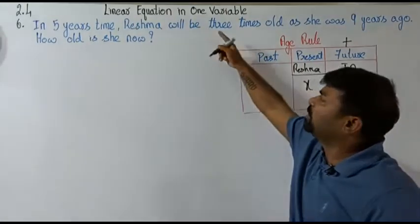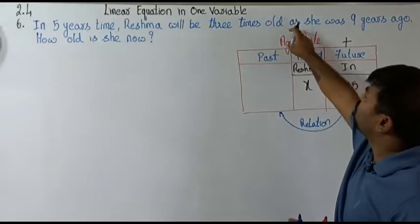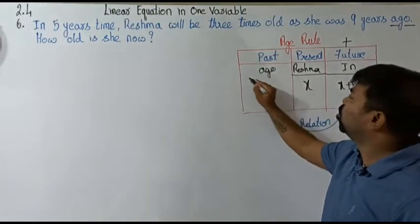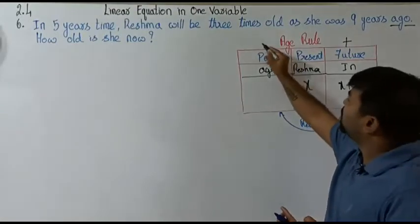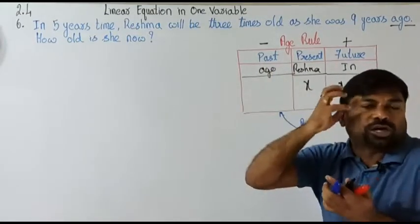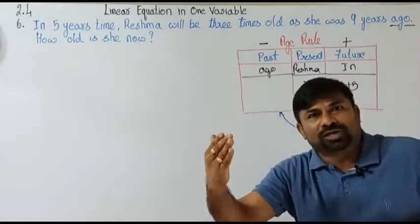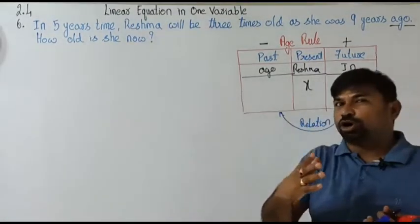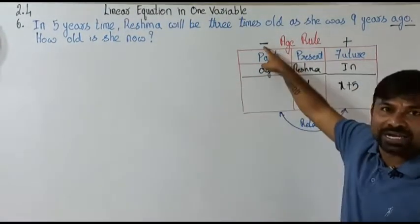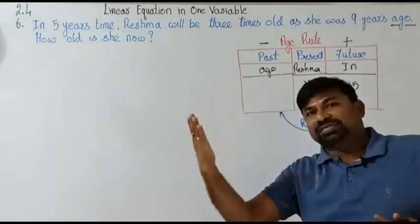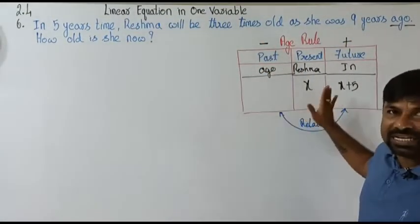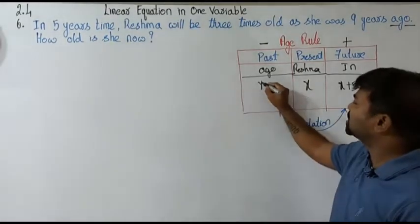Reshma will be three times as old as she was nine years ago. Please remember: when a word or phrase refers to the future, we take it as plus to the present age. When it refers to the past, we always take it as minus. The word 'ago' means past, so nine years ago means x minus 9.